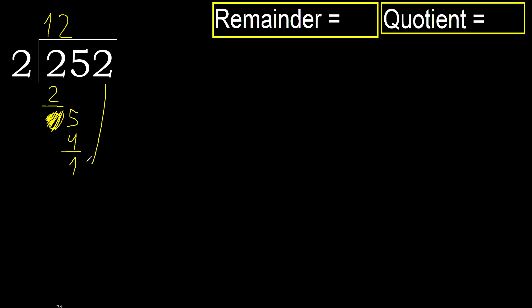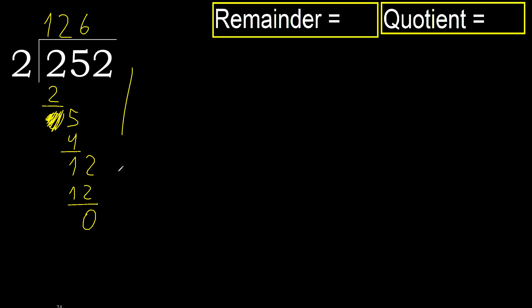Next: 12. 2 multiplied by 6 is 12, which is not greater. Ok, subtract 0. Next, there is no number, therefore finish it. Ok.